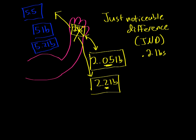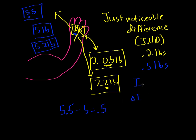These numbers are illustrative — actual experimental values might differ — but the concept holds. For the 5-pound example, the JND is 0.5 pounds. We can define variables: I is the intensity of the stimulus (2 pounds or 5 pounds), and ΔI is the just noticeable difference. So for the 5-pound example, I = 5 and ΔI = 0.5; for the 2-pound example, I = 2 and ΔI = 0.2.